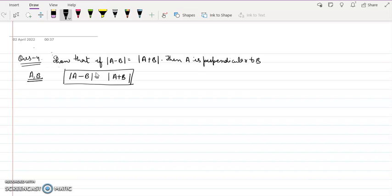If suppose there is a vector a, then a dot a, we know that it is mod a into mod a times cos 0, and hence a dot a is equal to mod a square.